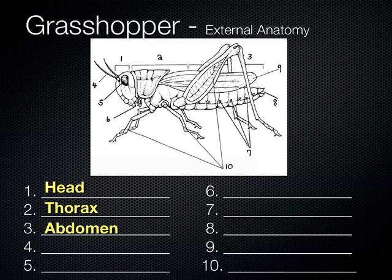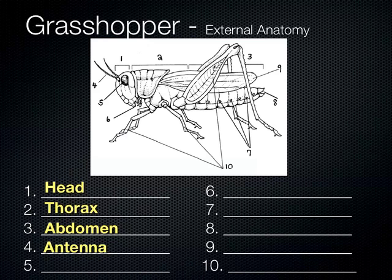Looking at some of the actual individual parts of the grasshopper — what do we call number four? Antennae. One is an antenna, multiple are antennae. They are sense organs. The antennae are used for feeling, and some are used for something like smelling — to sense certain chemicals in the air. They have various functions, but they're generally sense organs to take in information for the grasshopper.